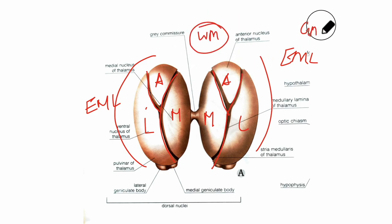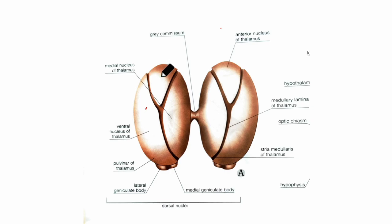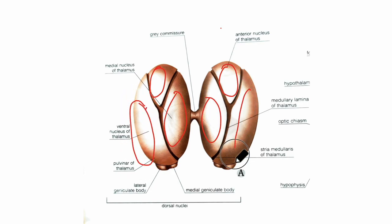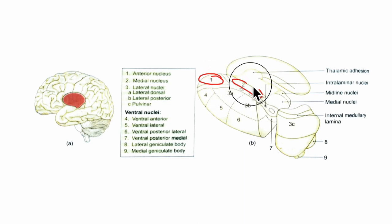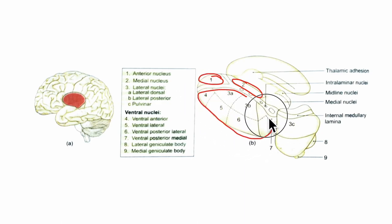Now looking at the grey matter: we have the anterior nucleus, the medial nucleus, the lateral part of the thalamus — which is the largest and also called the neothalamus — and finally the intralaminar nuclei. Through this diagram, we are going to learn about the grey matter in detail. The grey matter of the thalamus is divided into the anterior nucleus, the medial nucleus, and the lateral part of the thalamus which is the largest and also called the neothalamus.